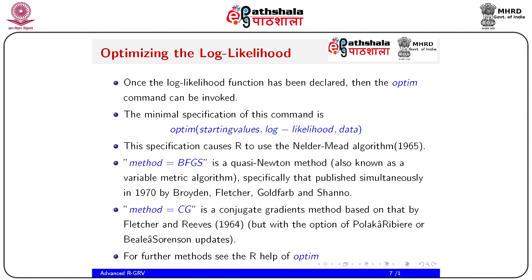Once the log likelihood function is declared, the optim command can be invoked. The minimum specification is: optim(starting_value, log_likelihood_function, data). This causes R to use the Nelder-Mead algorithm by default (1965). Setting method = 'BFGS' invokes the quasi-Newton method, also known as the variable metric algorithm, published simultaneously in 1970 by Broyden, Fletcher, Goldfarb, and Shanno.